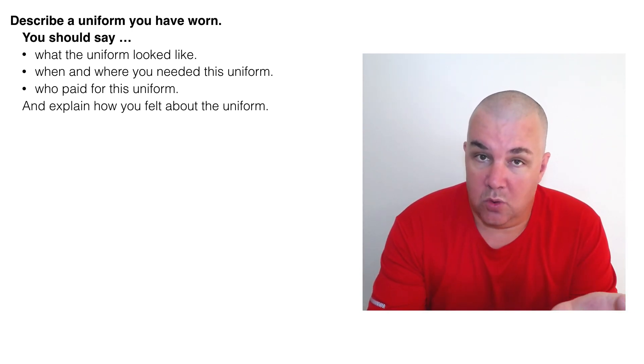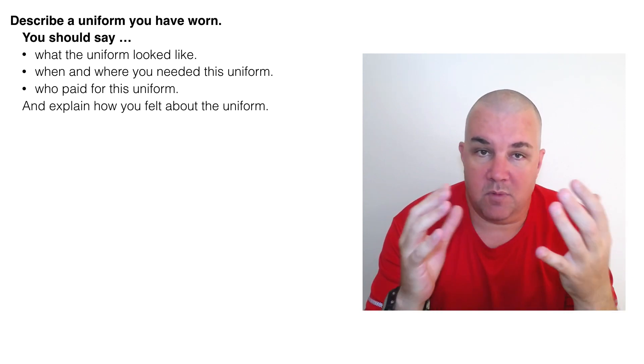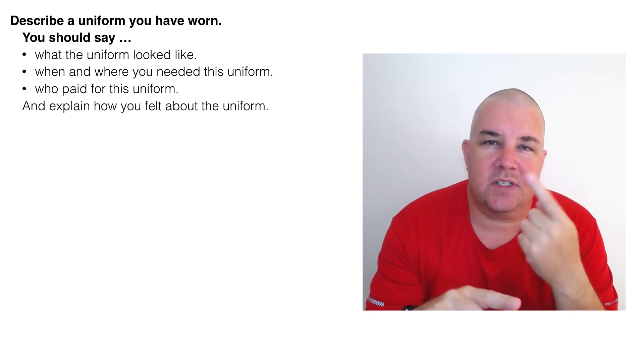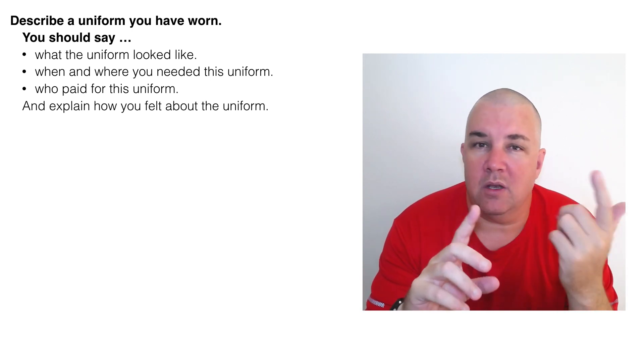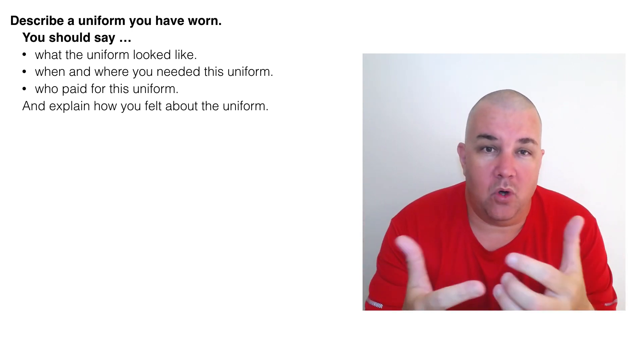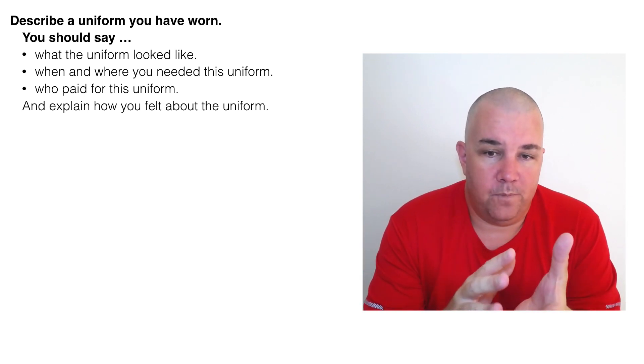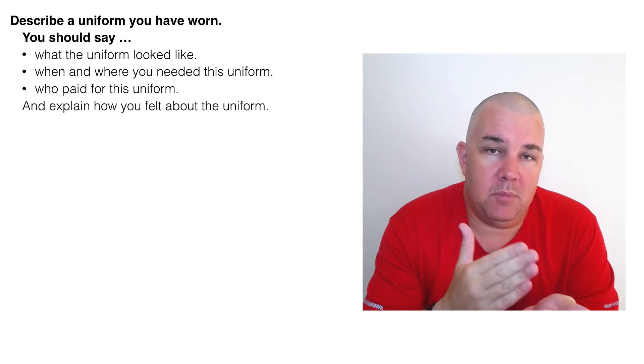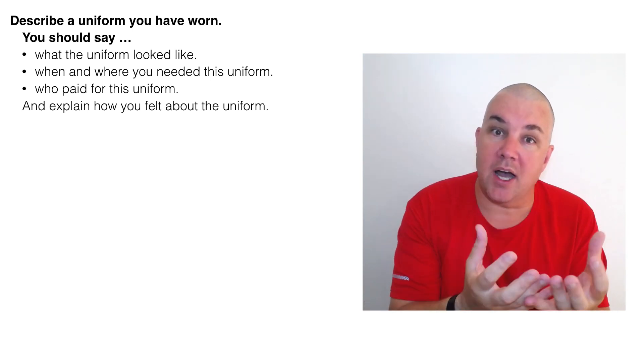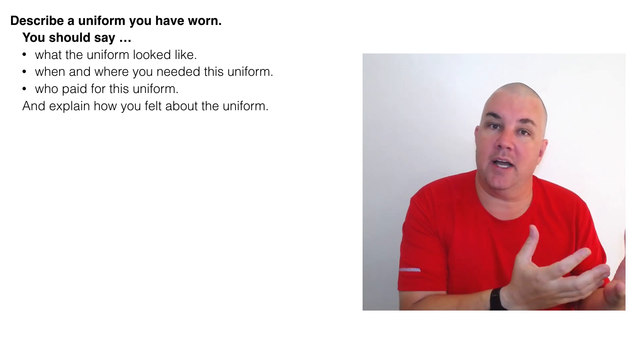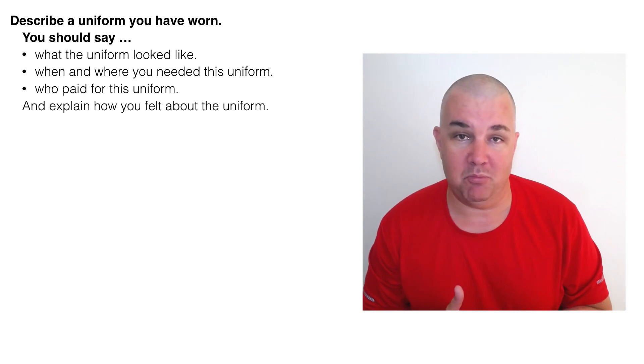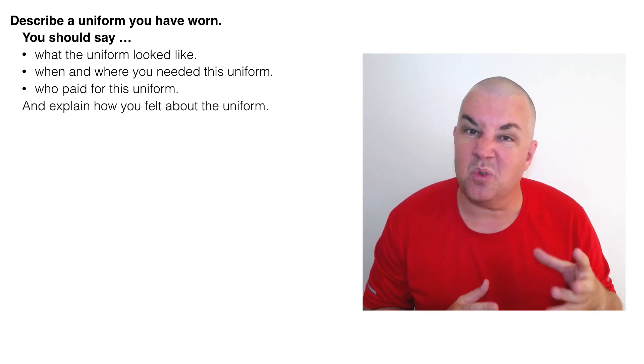When and where you needed this uniform. So again, this is something that comes up quite often in part two, location and time. So when, don't just say one year ago, when one year ago, what month was it? What season? Where were you? Why did you need it? What was it for? Who paid for the uniform? So payment is a common one for objects because most objects you pay for, you buy a gift or you buy an important item. So they want you to talk about money here. You didn't pay for it. Say that you didn't pay for it.